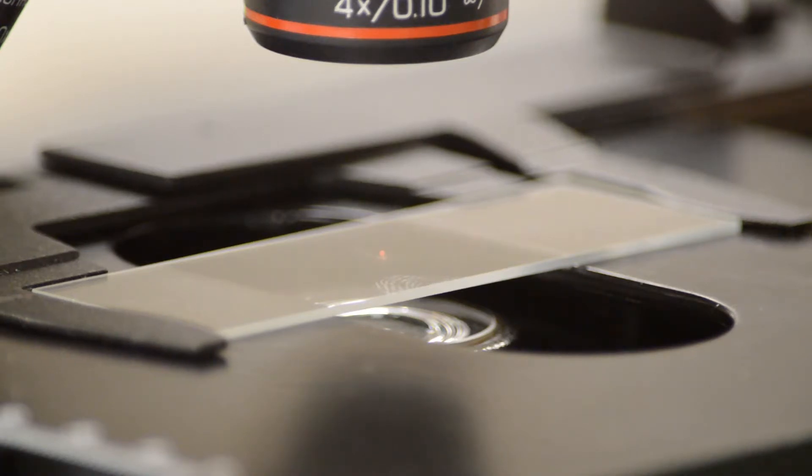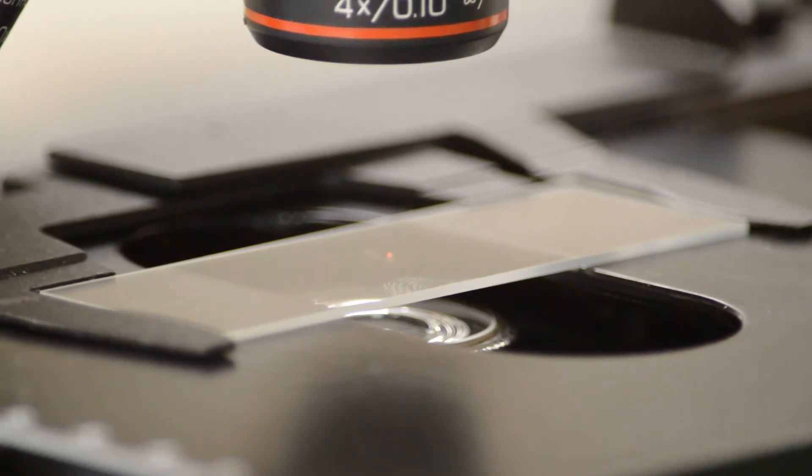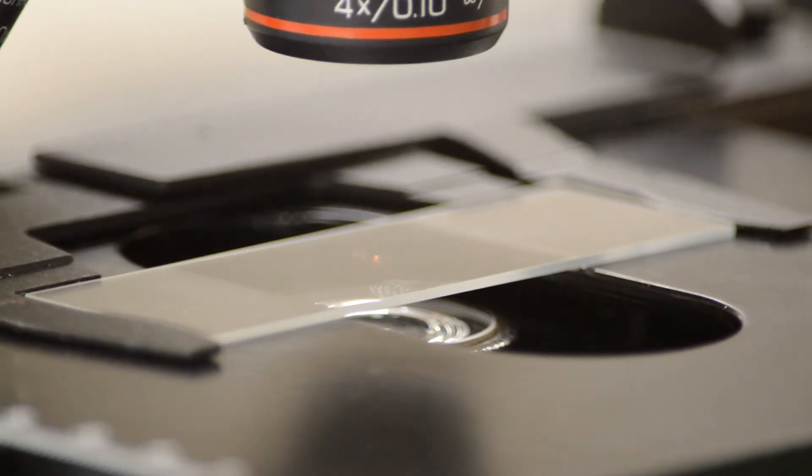We center the specimen under the 4x objective and then we focus using the coarse focusing knob to push the material as far up as possible, and then the fine focusing knob to bring it into focus. And you can see how in this particular case we now have this in focus.